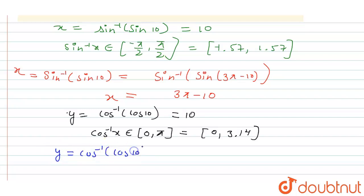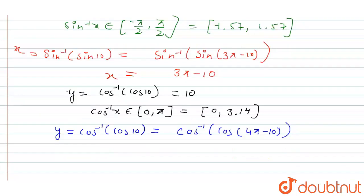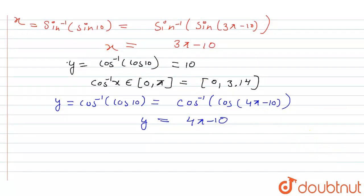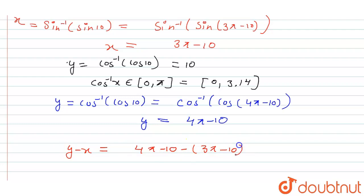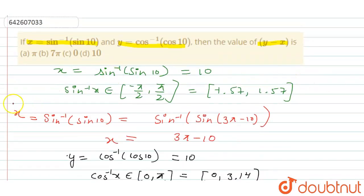So cos inverse cos 10 equals cos inverse cos (4π minus 10). We can see that 4π minus 10 belongs to the range [0, π]. So finally we can write y equals 4π minus 10. We have obtained x equals 3π minus 10 and y equals 4π minus 10. So y minus x equals (4π minus 10) minus (3π minus 10), which on solving gives y minus x equals pi.